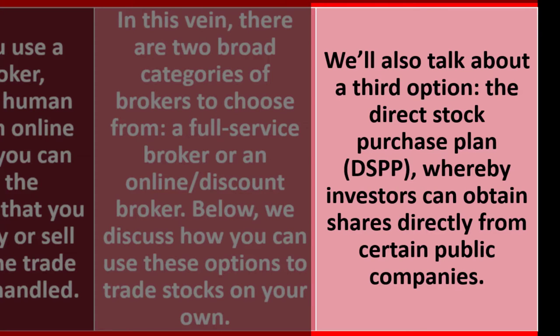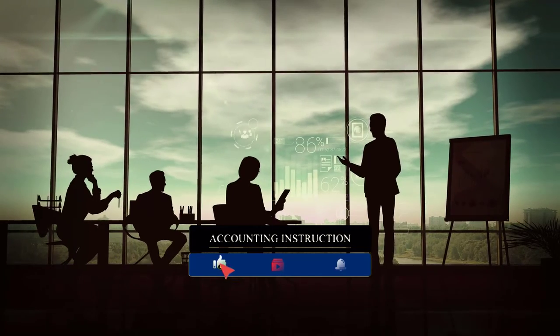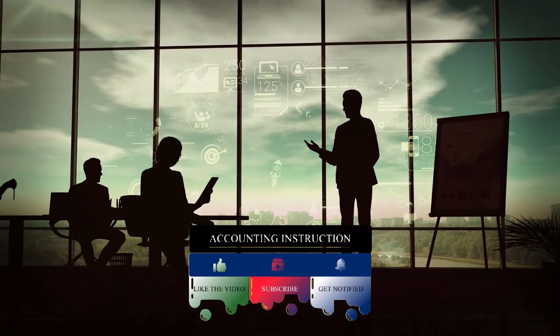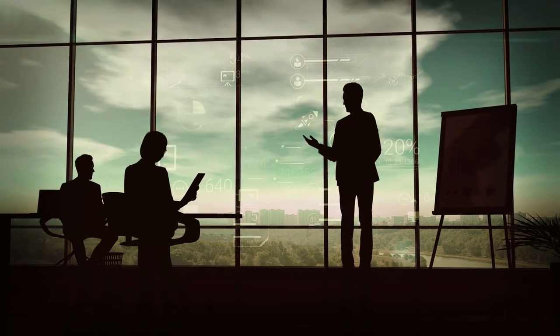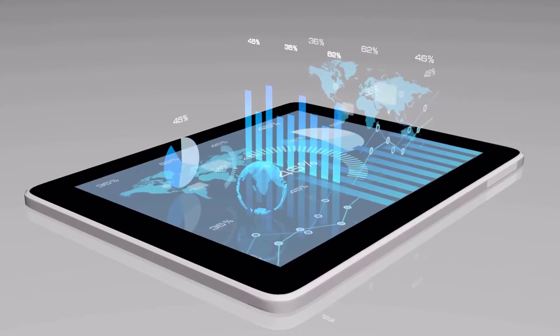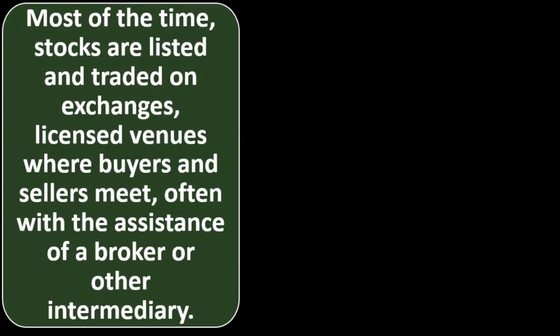Most of the time, stocks are listed and traded on exchanges. When companies reach a certain size, they may want to generate capital to grow faster. One way is to issue stocks to the public. To do that, they typically get listed on an exchange, which facilitates those transactions. In return, they must adhere to exchange regulations such as standardized reporting, so that people can trust the information provided.